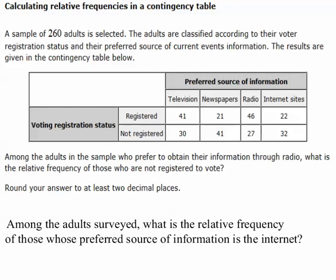Today we're going to take a look at calculating relative frequencies in a contingency table. We have a sample of 260 adults selected. The adults are classified according to their voter registration status and their preferred source of current events information. The results are given in the contingency table below. A contingency table is a way of displaying survey data and identifying a certain relationship or breakdown of the survey results.